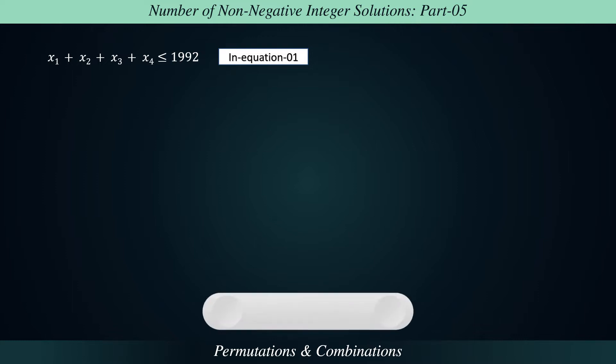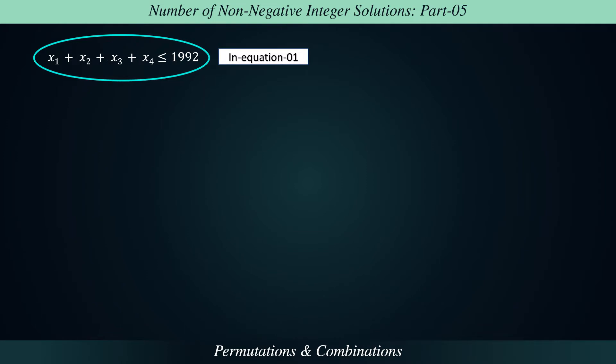Up till now, we know how to find the number of non-negative or positive integer solutions of an equation, but we don't know how to find it in case of any inequality. If we could replace the sign of inequality by a sign of equality, then our problem will be resolved.